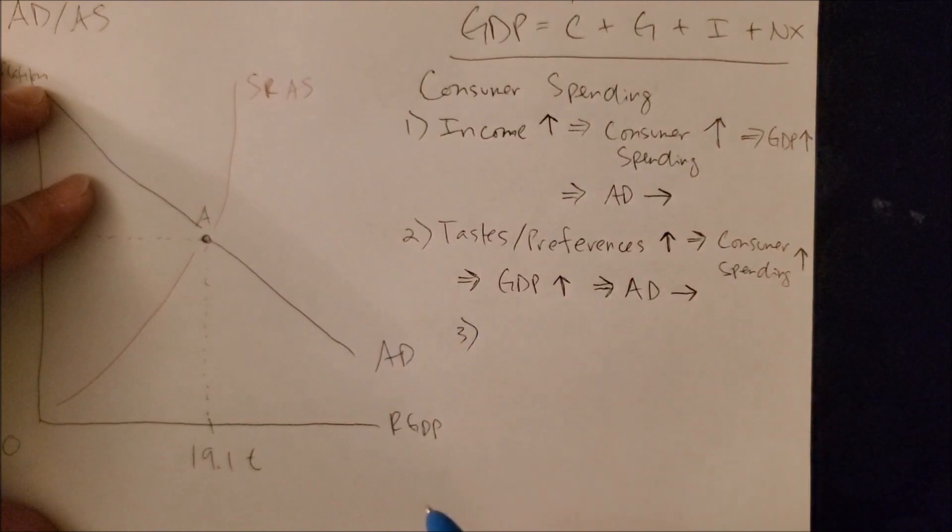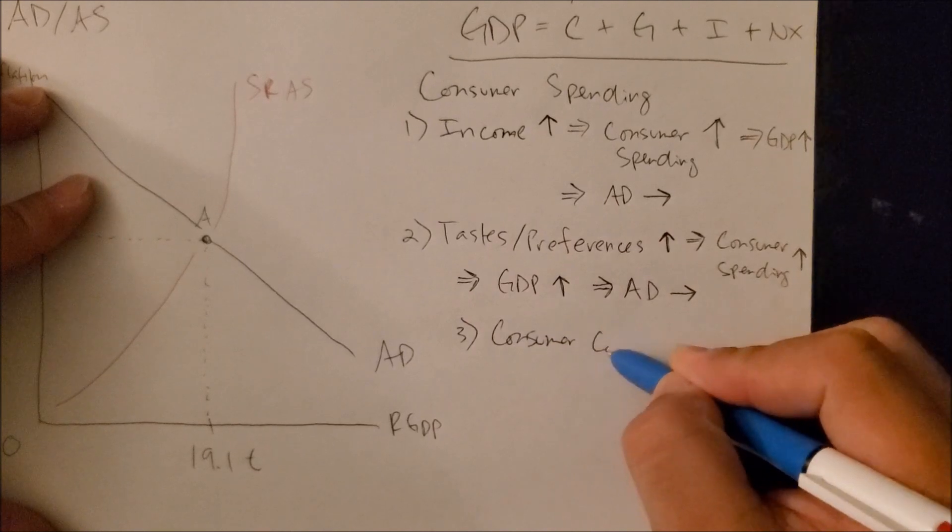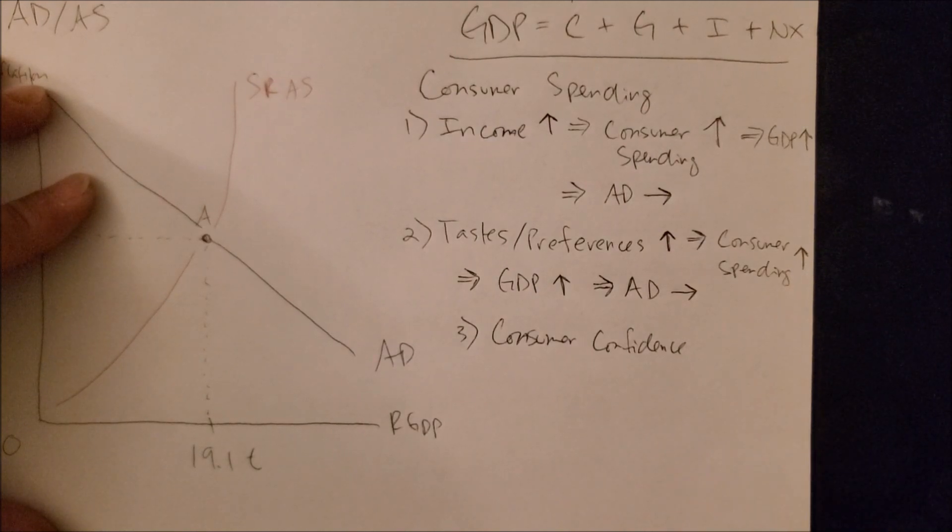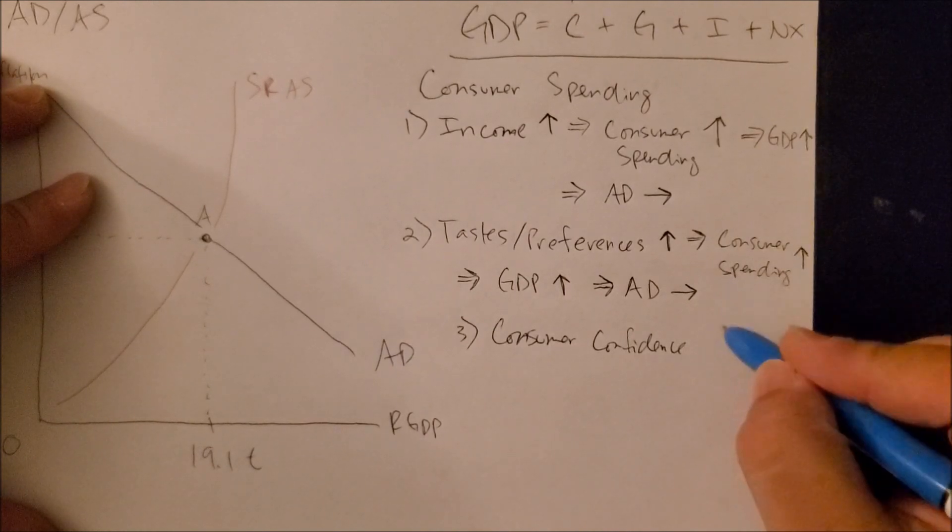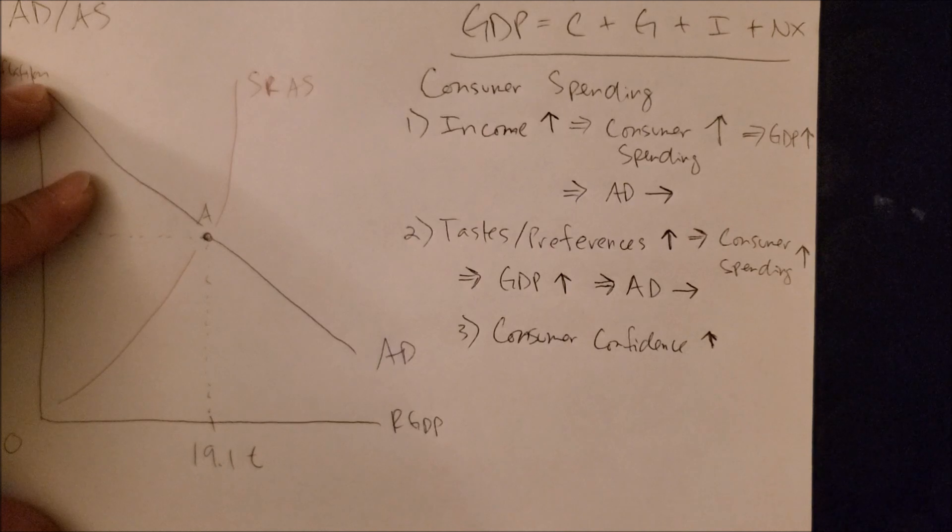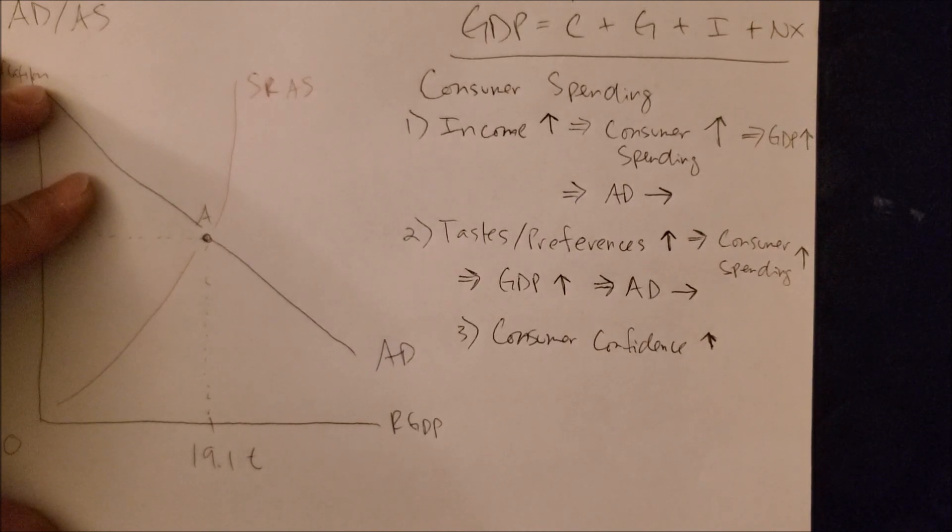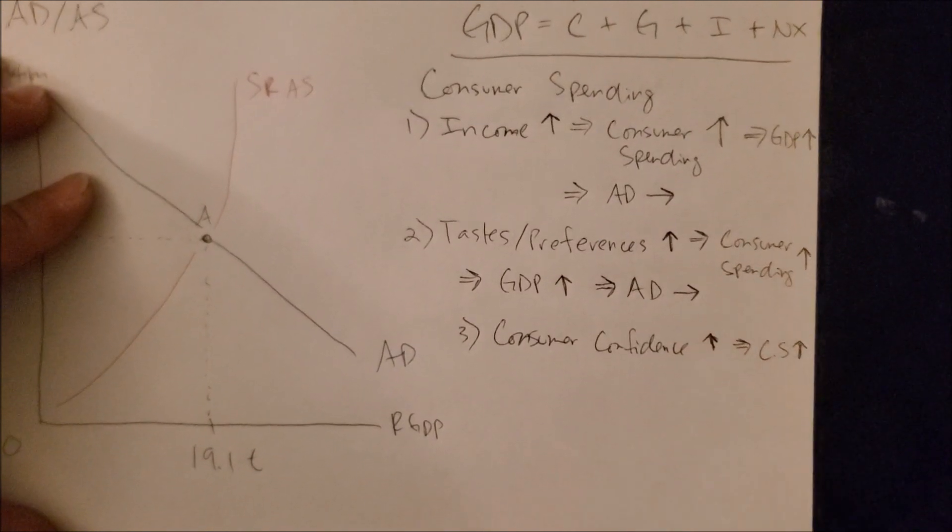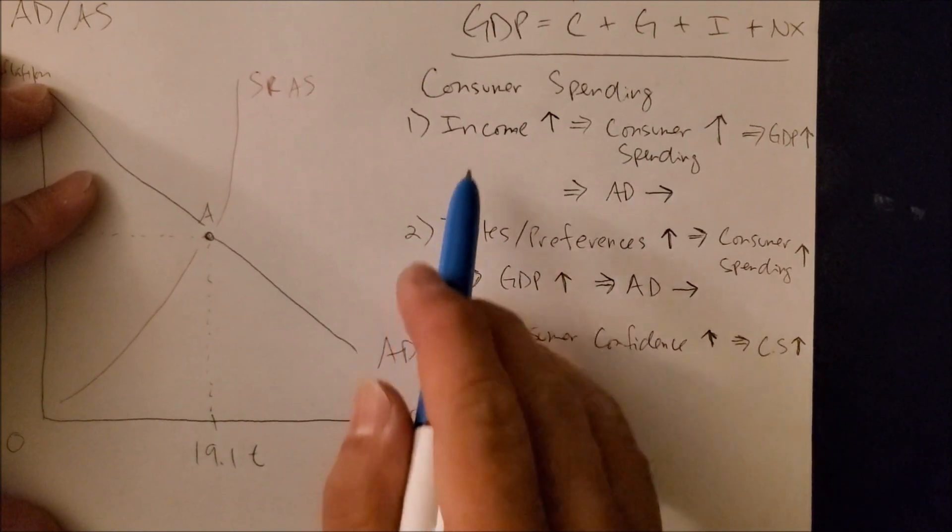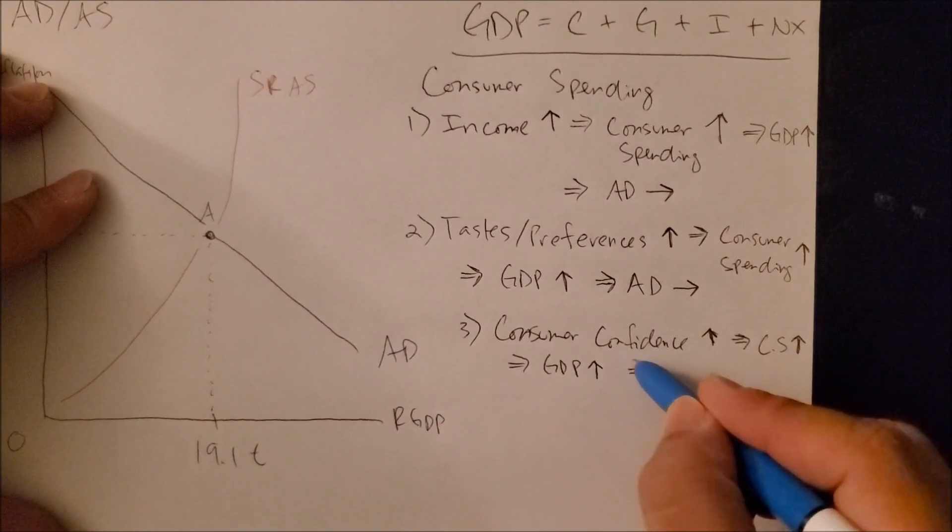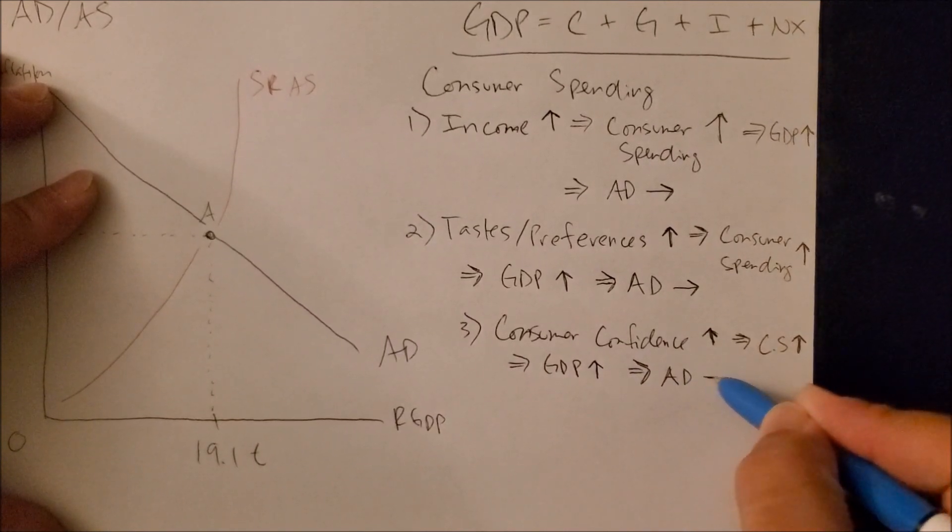Number three, we can look at consumer confidence. How much we as consumers feel about the economy today and in the next six months? Now, there is a way to measure consumer confidence through a five-question survey. But again, in essence, if we see consumer confidence increasing, this makes us believe that we can consume the goods that we want today because we have a really good outlook in the future. This would, in turn, increase consumer spending. And like we just saw with income and taste and preferences, GDP would also increase, thereby affecting AD to shift to the right.